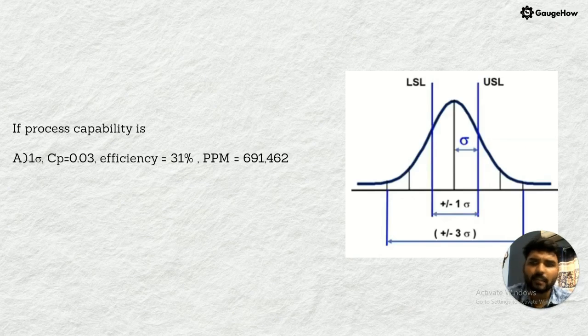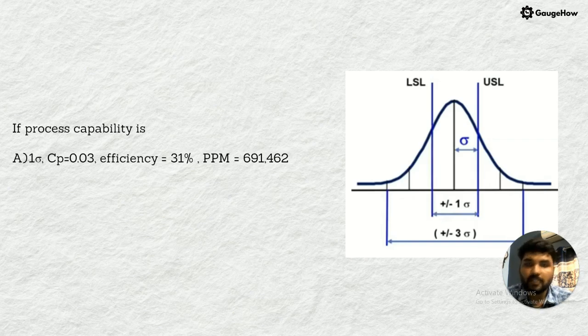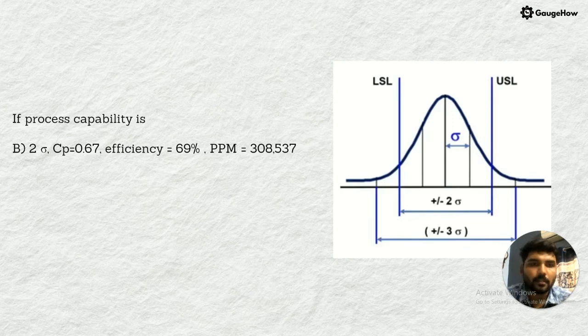Here you can see the process capability. If the process is one sigma, Cp which means process capability is 0.03, efficiency will be 31 percentage. PPM stands for parts per million or DPMO, defects per million opportunities. Here you can see plus or minus one sigma which represents the tolerance level and plus or minus three sigma which represents the process. The tolerance level is very high when compared to the process. The process will reach two sigma with process capability 0.67, plus or minus three sigma, with efficiency 69 percentage and PPM 308,537.